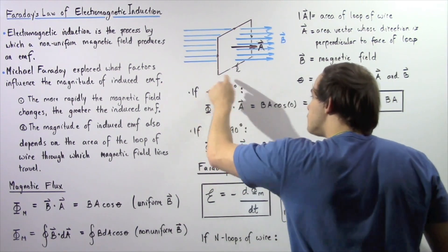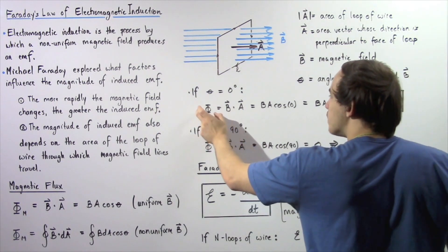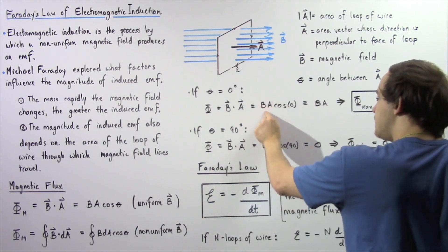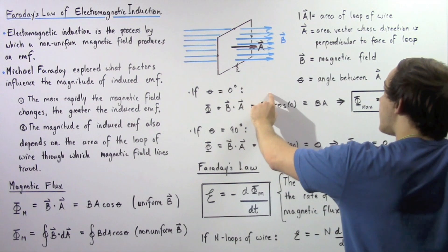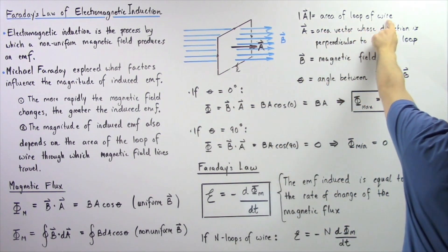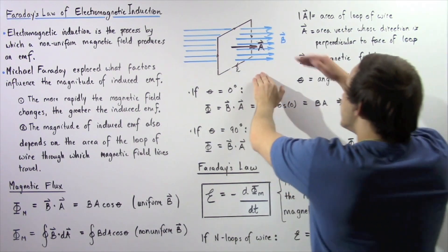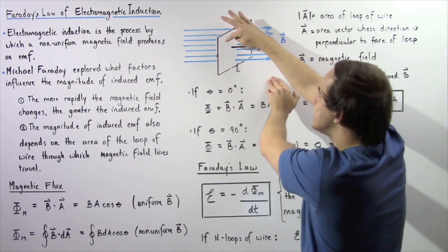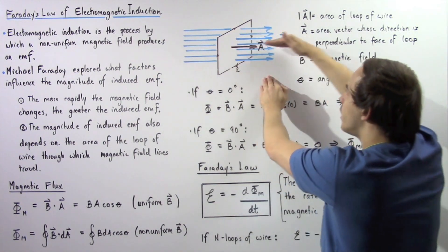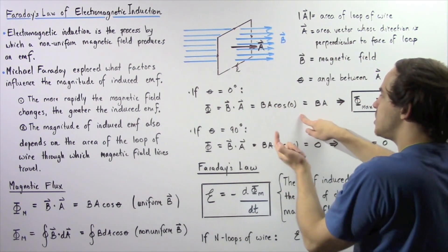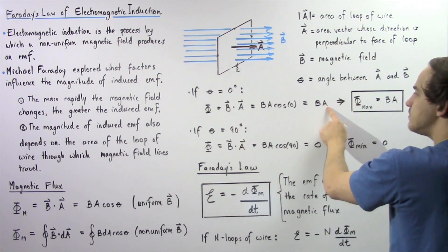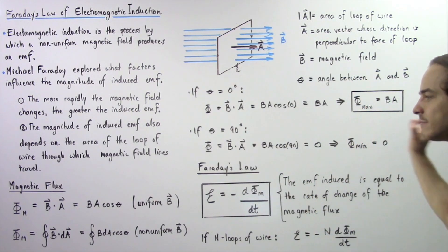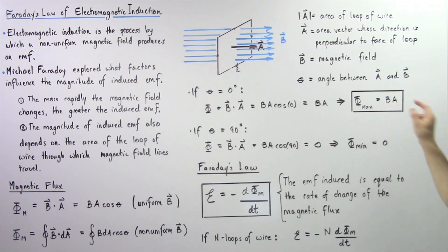If the angle theta is zero, our magnetic flux equals the dot product of the two vectors, which is the magnitude of B multiplied by the magnitude of A — simply the area of the loop — multiplied by cosine of the angle. In the diagram, the magnetic field lines and the area vector point in the same direction, so the angle is zero. Because cosine of zero is one, the magnetic flux equals B times A. When the angle is zero degrees, the magnetic flux is at a maximum, equal to B times A.